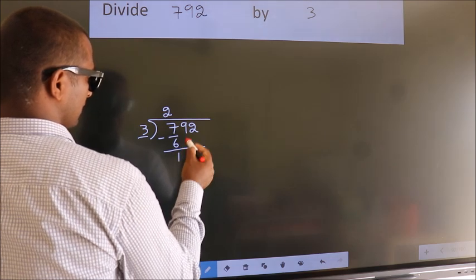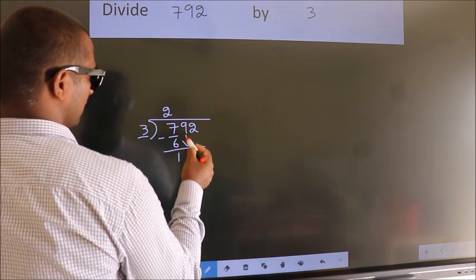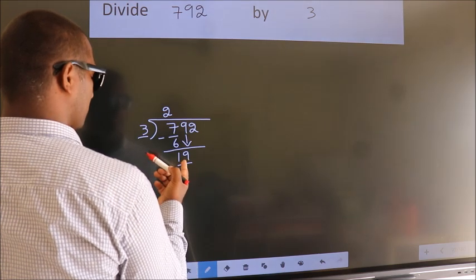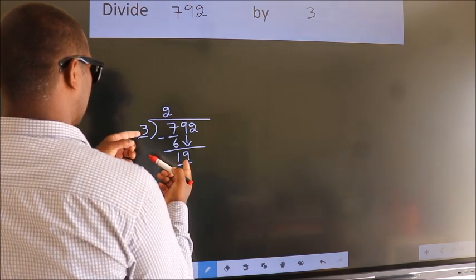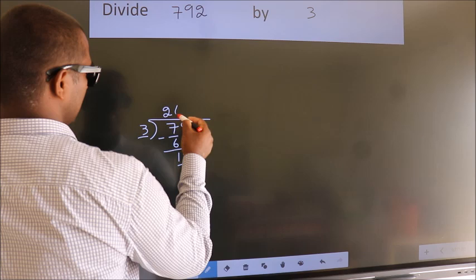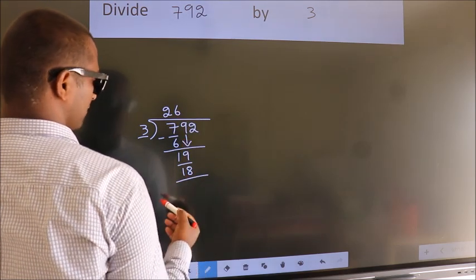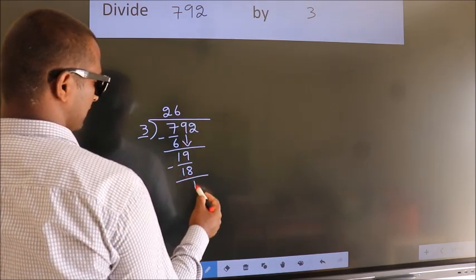After this, bring down the beside number, so 9 down, so 19. A number close to 19 in 3 table is 3 times 6, which is 18. Now we subtract, we get 1.